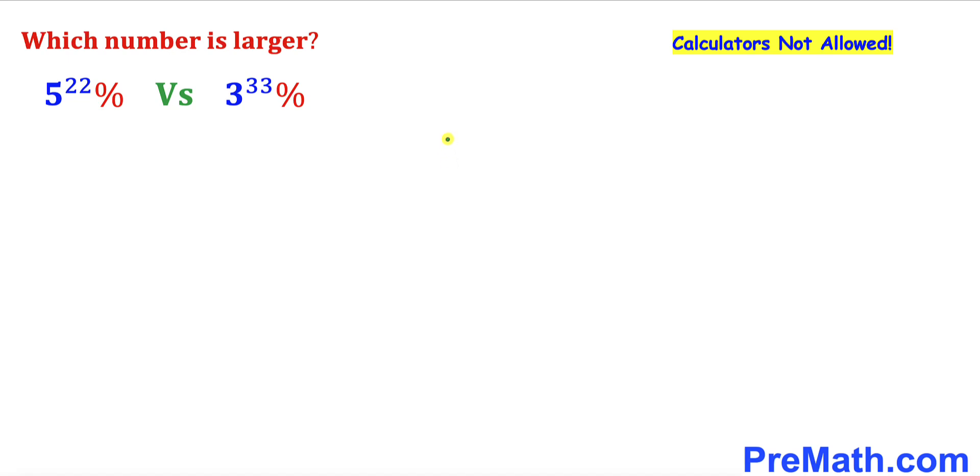Welcome to PreMath. We have been given these two numbers: 5 to the power of 22 percent and 3 to the power of 33 percent. The question is, which number is larger? We are not supposed to be using calculators of any kind. Please don't forget to give a thumbs up and subscribe.